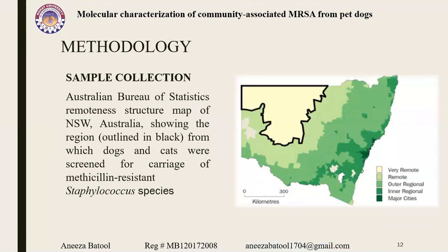Sample collection: this study was conducted in a region of New South Wales covering more than 2,200,000 square kilometers, classified as very remote. The region outlined in black is where dogs and cats were screened for carriage. Participating communities are geographically isolated with limited or no access to veterinary services. Programs were conducted over a three-to-five day period in each community. Sex, breed, and age were estimated on physical and dental examination. Body condition and skin lesions or wounds were also recorded. Ethics approval was granted by the Animal Ethics Committee of the University of Sydney.